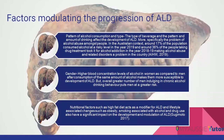Gender is another modifying factor. Women have higher blood alcohol concentration levels than men after consuming the same amount of alcohol, making them more susceptible to developing ALD. For example, if both male and female consume 20 ml of alcohol each, the blood alcohol concentration in females is greater than in males. However, overall, because a greater number of men engage in risky drinking behavior, men remain at greater risk in terms of prevalence.